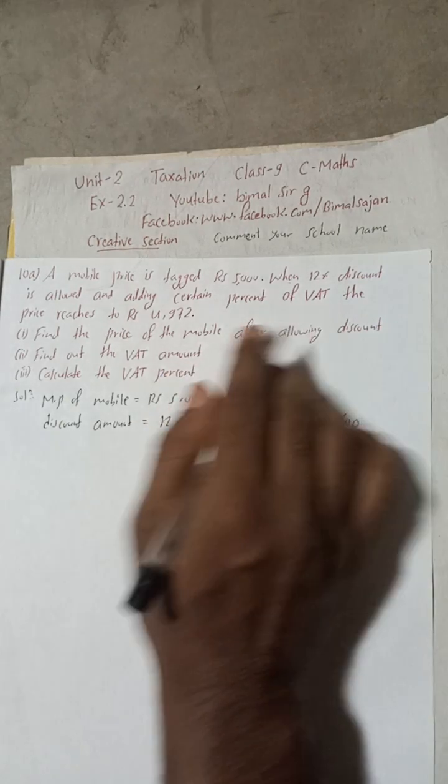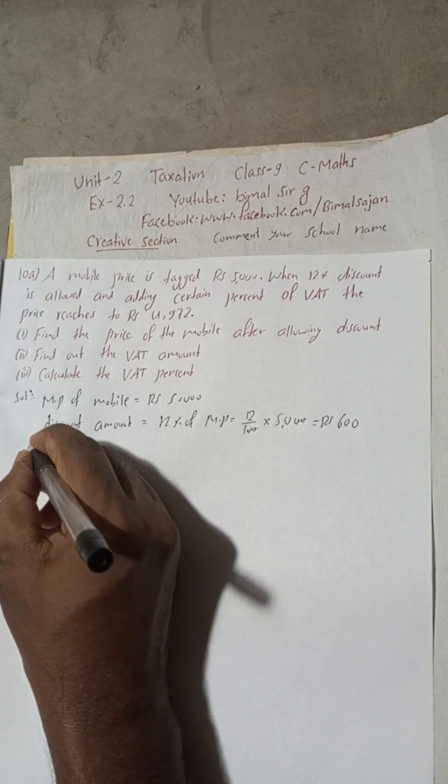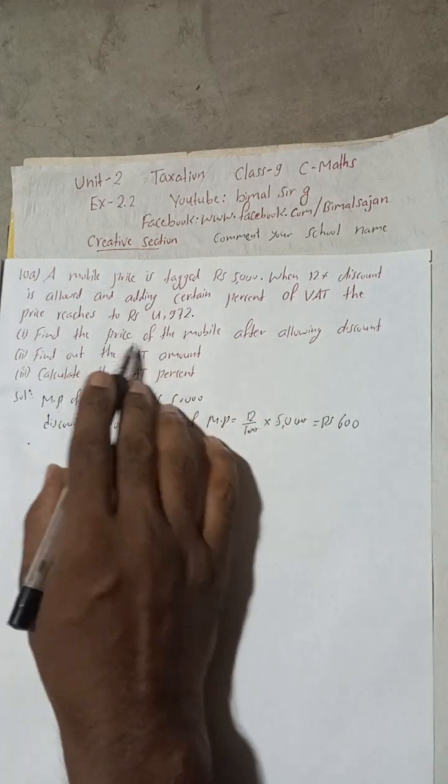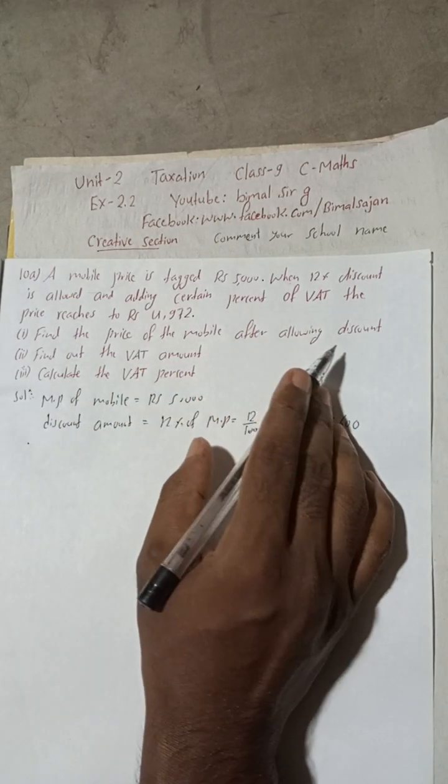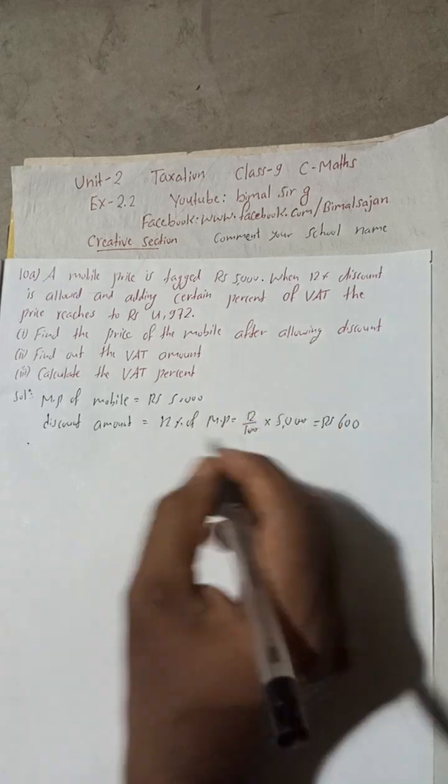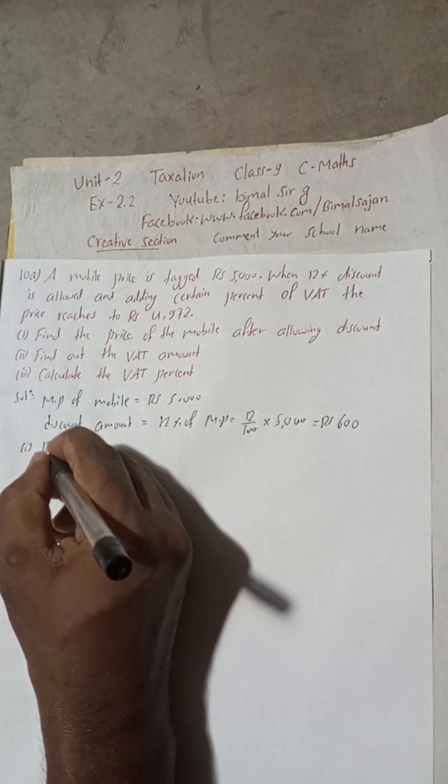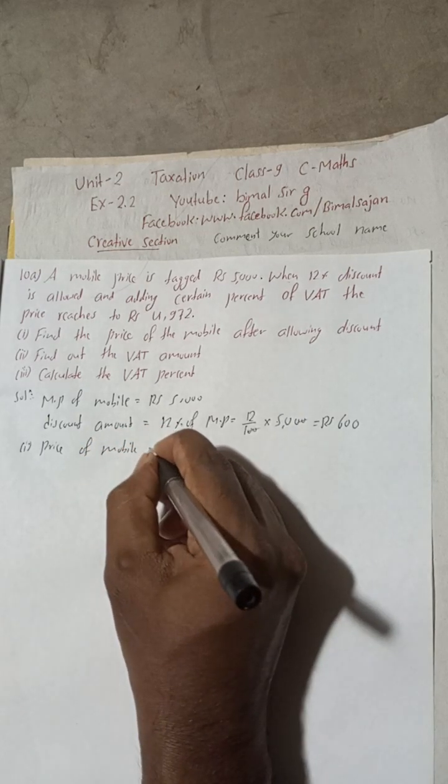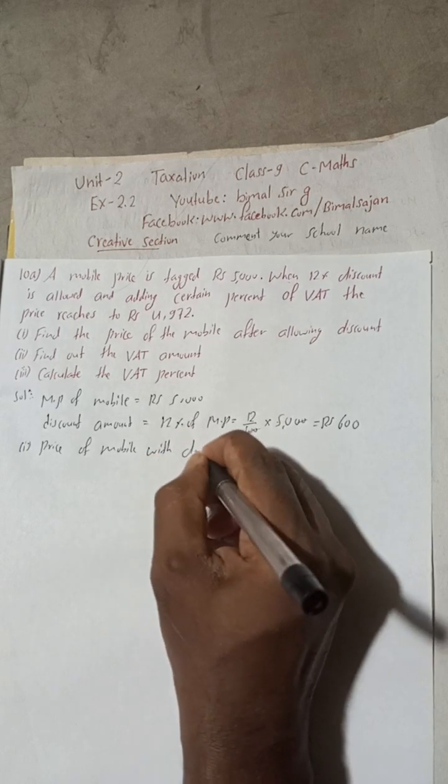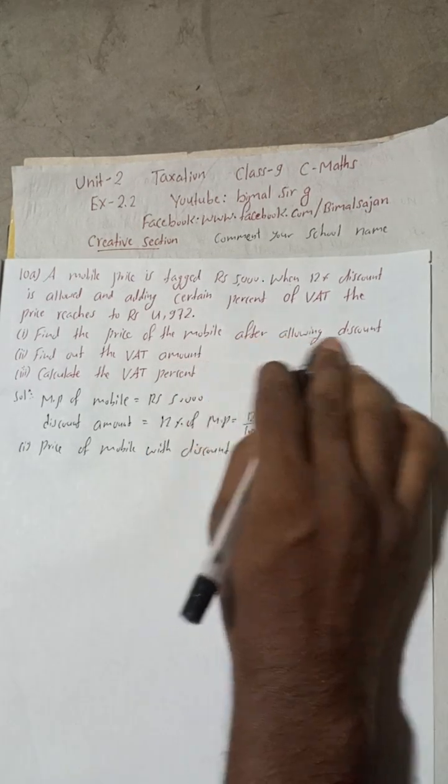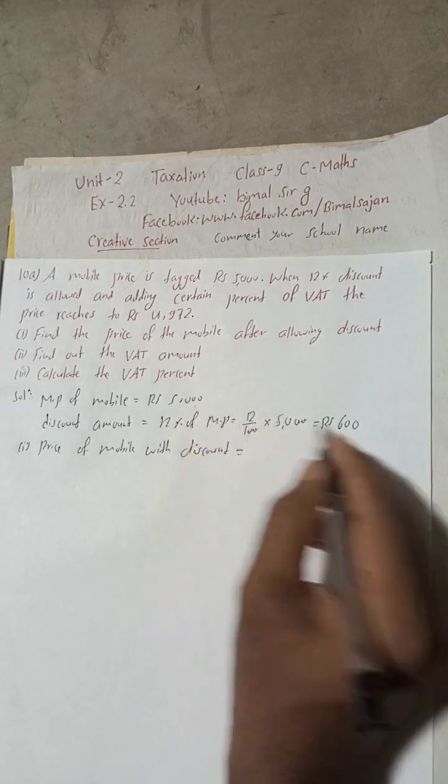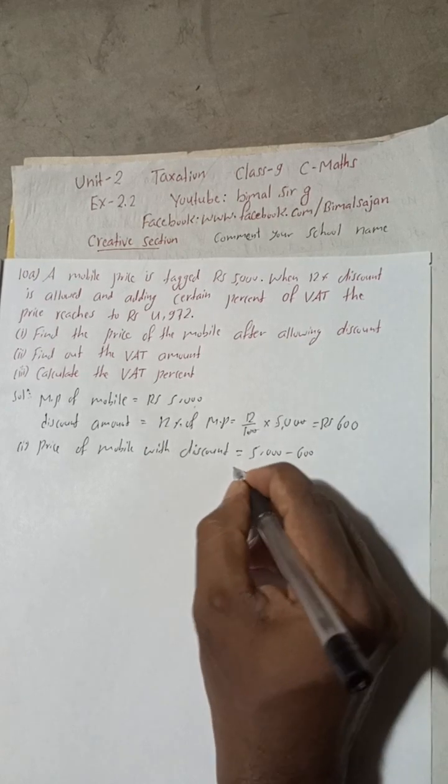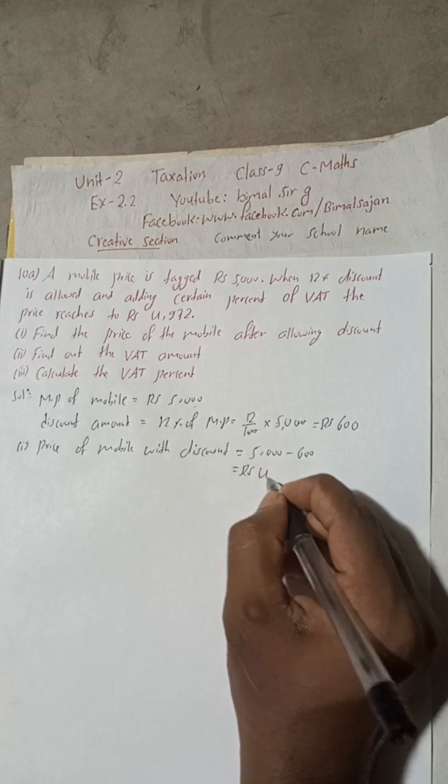Now SP with discount. Now here, find the price of the mobile after allowing discount. So this is to find the price of the mobile after allowing discount. Allowing discount or with discount, you can write. Now here, number one: price of mobile with discount, or after allowing discount is same. That is equal to this price minus discount. So 5000 minus 600, this is equal to Rs 4400.